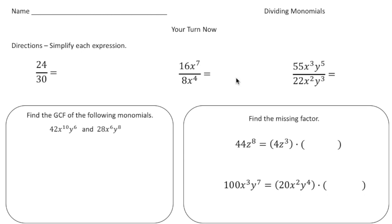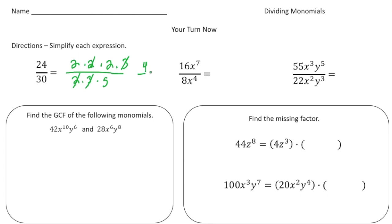Welcome back — let's see how you did. The first problem: simplify 24 over 30. Break apart 24 into its prime factorization: 2 times 2 times 2 times 3. And 30 is 2 times 3 times 5. Now reduce the common factors — cross out a 2 and a 2, cross out a 3 and a 3. We end up with 2 times 2 over 5, which is 4 fifths.